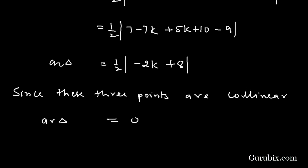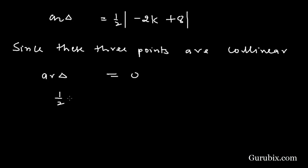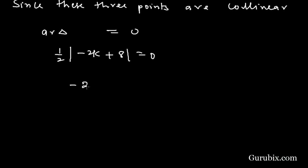This is equal to 0. This means 1 over 2 mod minus 2k plus 8 equals 0. This means minus 2k plus 8 equals 0. We shall take positive value here.